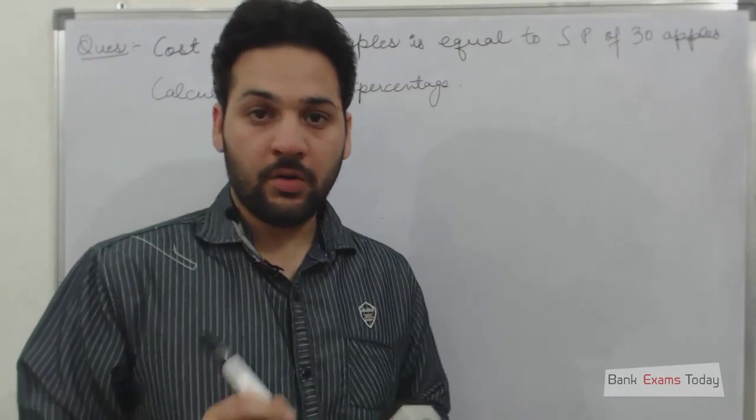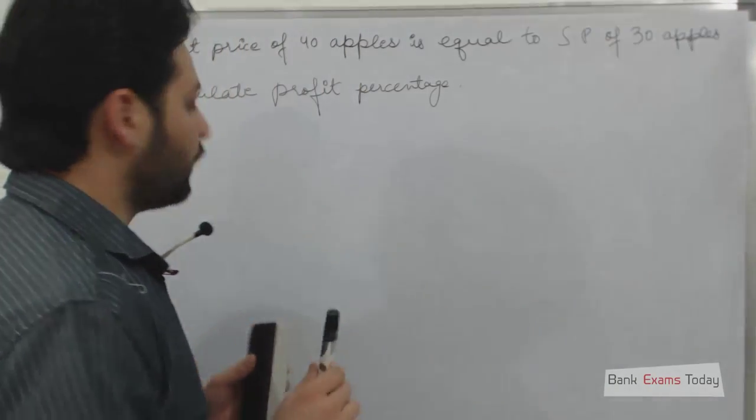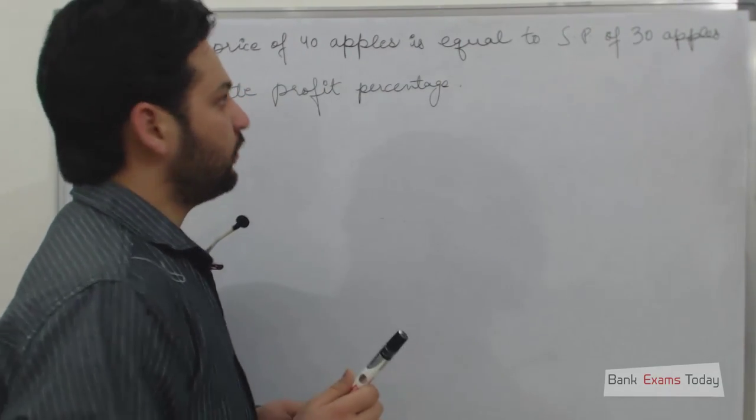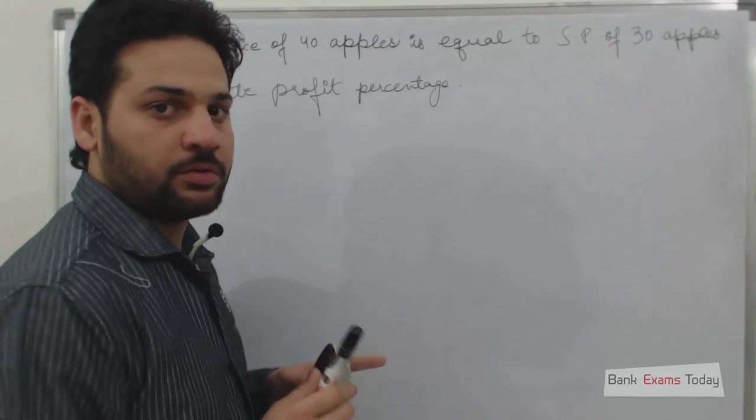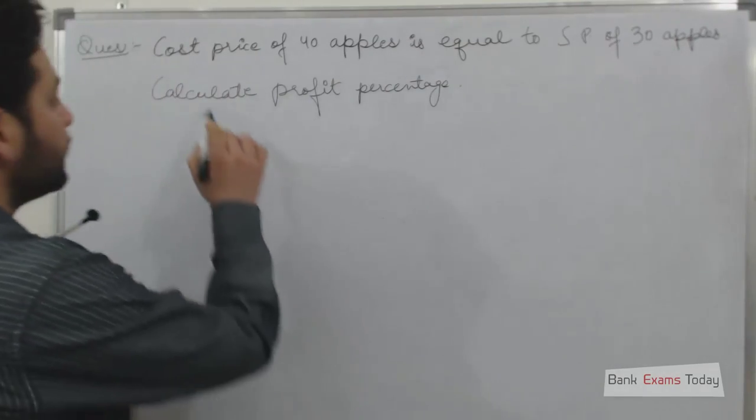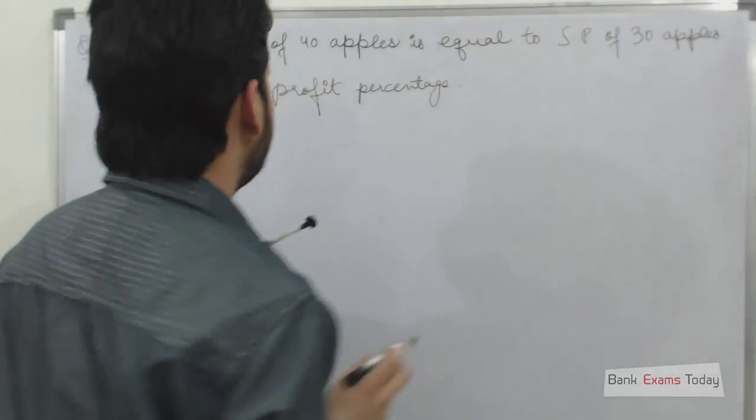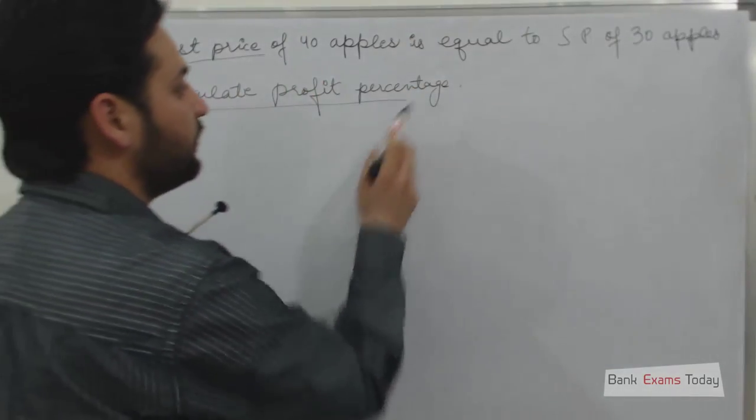Let's do a very important question. These questions are repeated in SBI PO 2012 or an IBPS PO 2012. Cost price of 40 apples is equal to selling price of 30 apples. You need to calculate the profit percentage.